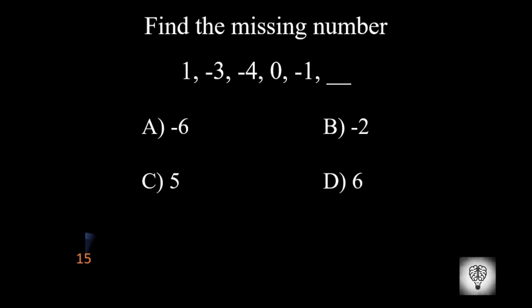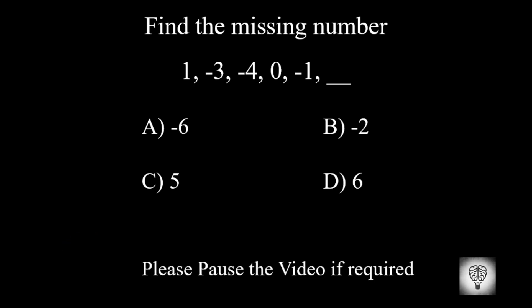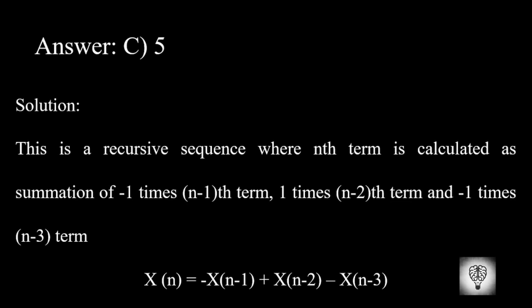Find the missing number. Please pause the video if required. The correct answer is 5. This is a recursive sequence where each term is calculated as the summation of minus 1 times the minus 1th term, plus 1 time the minus 2nd term, and minus 1 time the minus 3rd term.